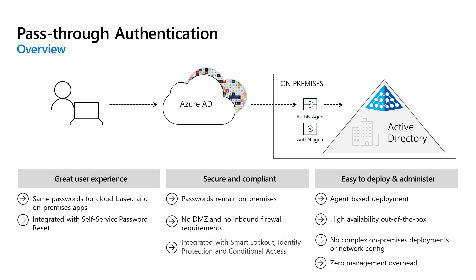The next one is pass-through authentication. When I go to sign into an app, it passes that auth through Azure Active Directory and into on-premises Windows Server Active Directory, and then a domain controller provides that authentication. This still allows self-service password reset, lets you use the same password for both cloud and on-premises apps, requires nothing in the DMZ, keeps the password on-premises, and still works with conditional access and all the identity protection features in Azure AD.